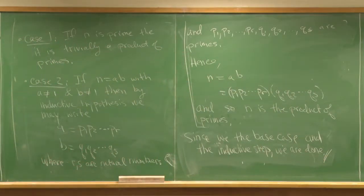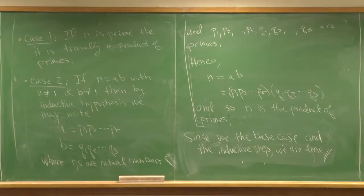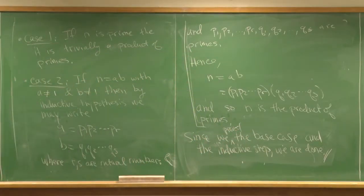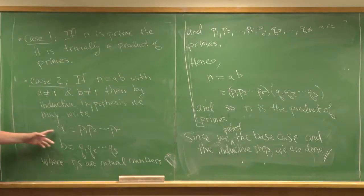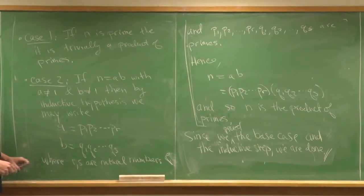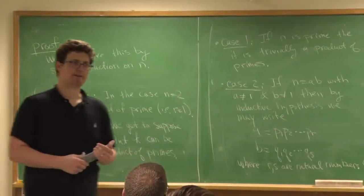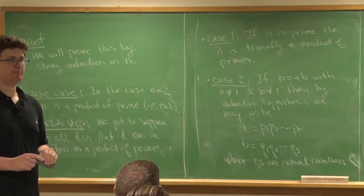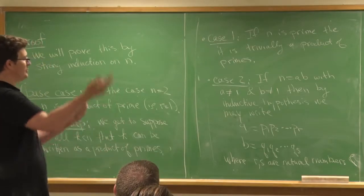What we did is write n as a composite and then applied the inductive hypothesis to write it as a product of primes. People sometimes think this seems so much stronger than normal induction because we get to assume way more — that's why it's called strong induction, because we can assume all the previous cases. Any questions?